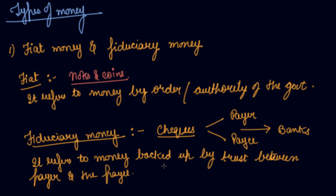Checks are fiduciary money as these are accepted as a means of payment on the basis of trust, not on the basis of any order by the government. So you give a check to someone, that person gets the money — you are the payer, that person is the payee, and the bank is the middleman. This is the difference between fiat money and fiduciary money.